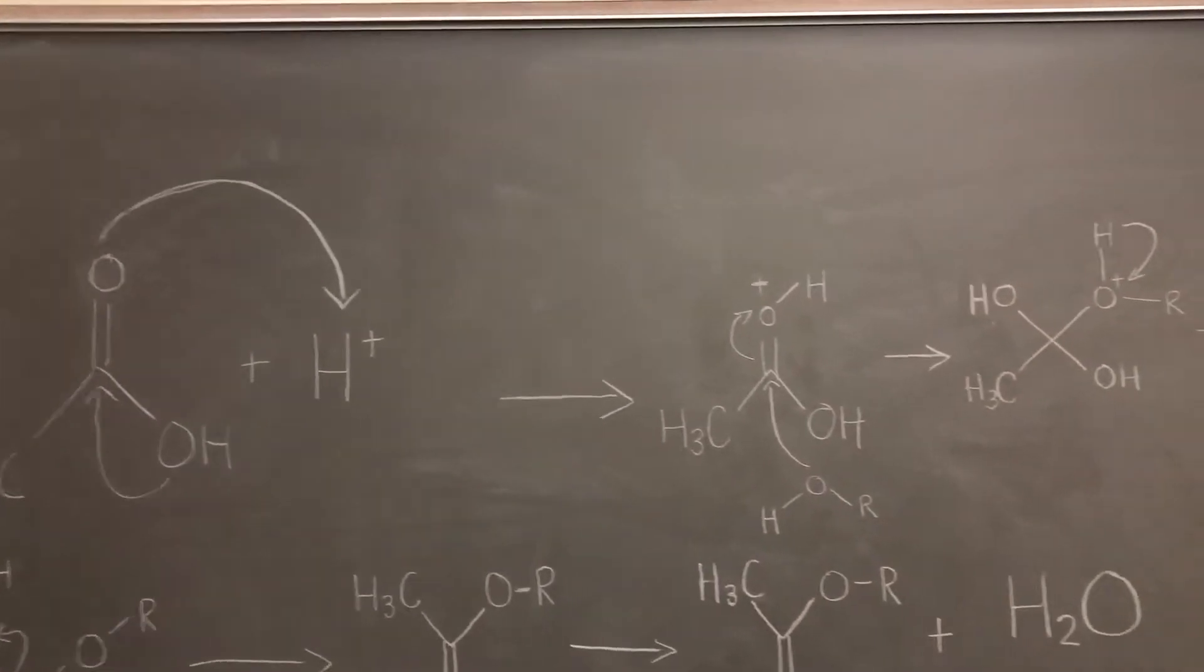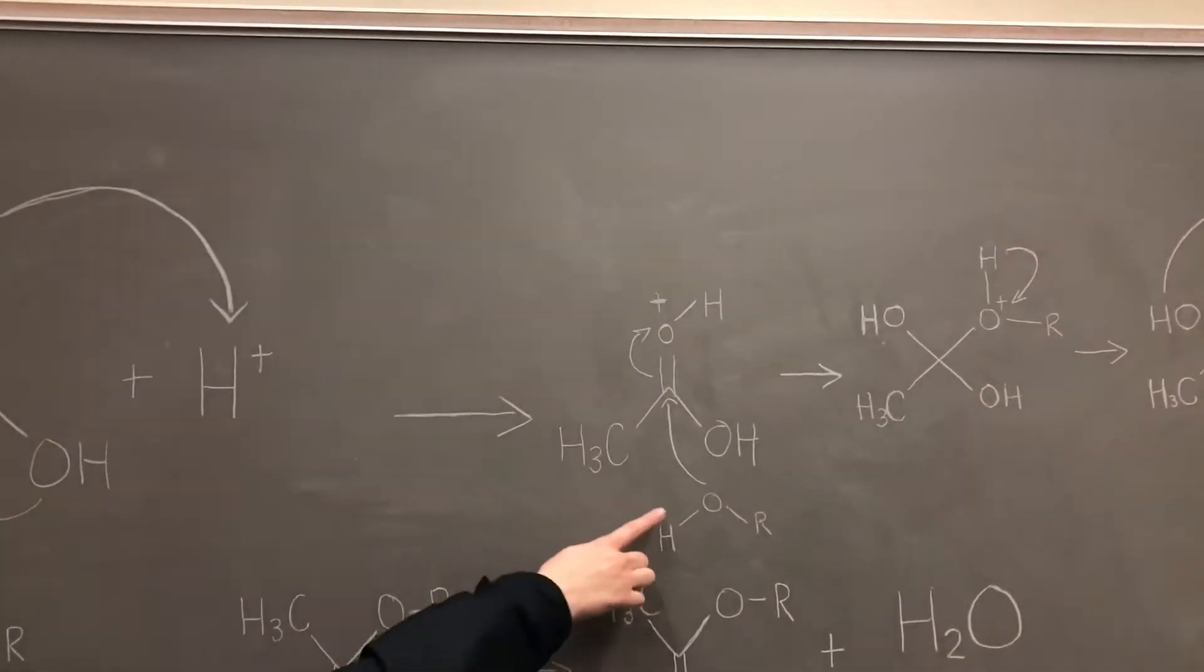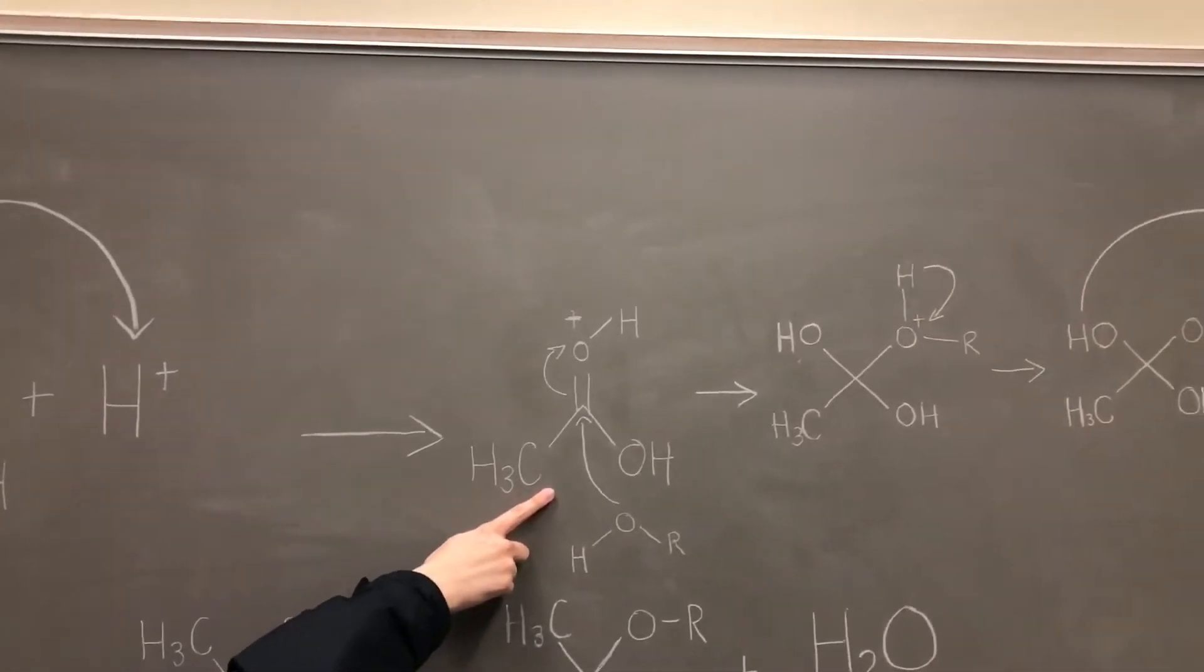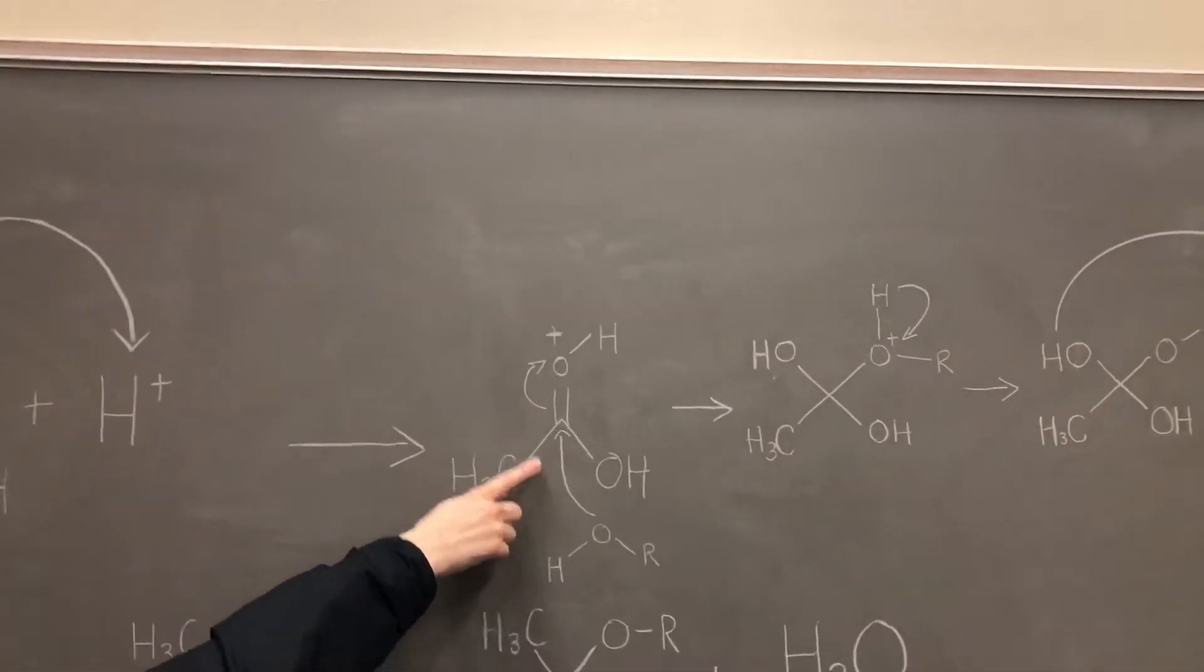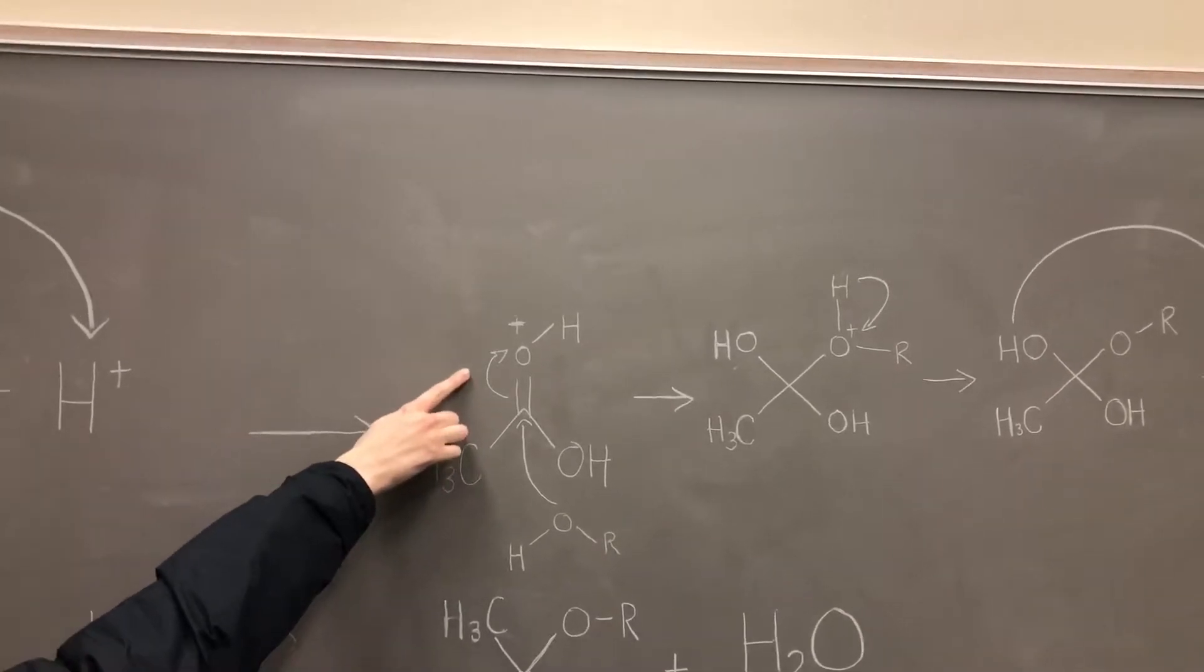After the oxygen is protonated, the alcohol can be added. The activated carbonyl group will be attacked by the oxygen of the alcohol, which allows for the pi bond to break.